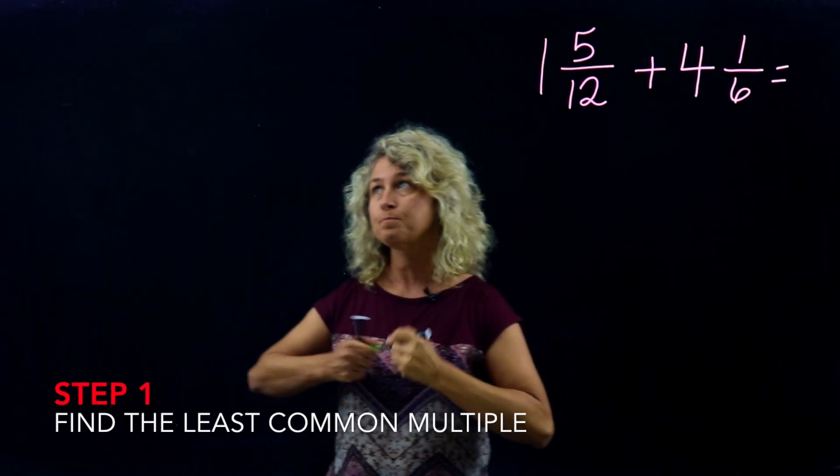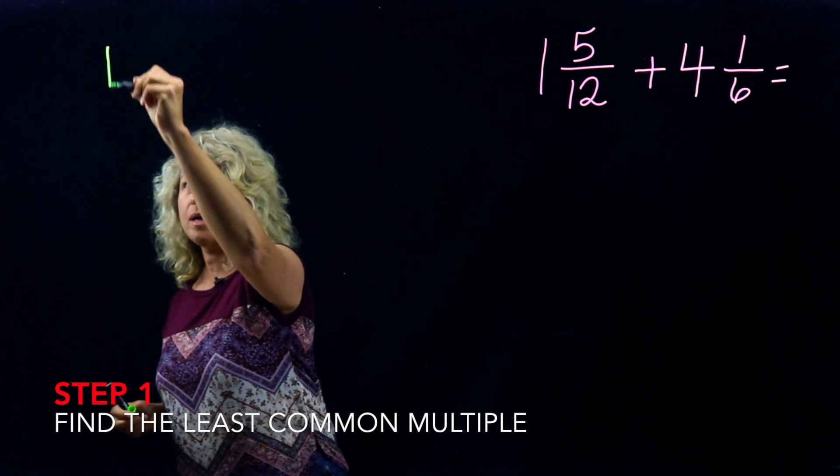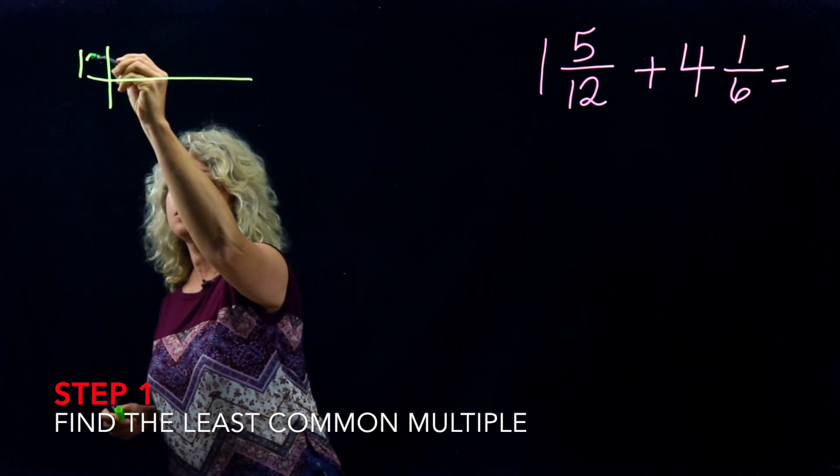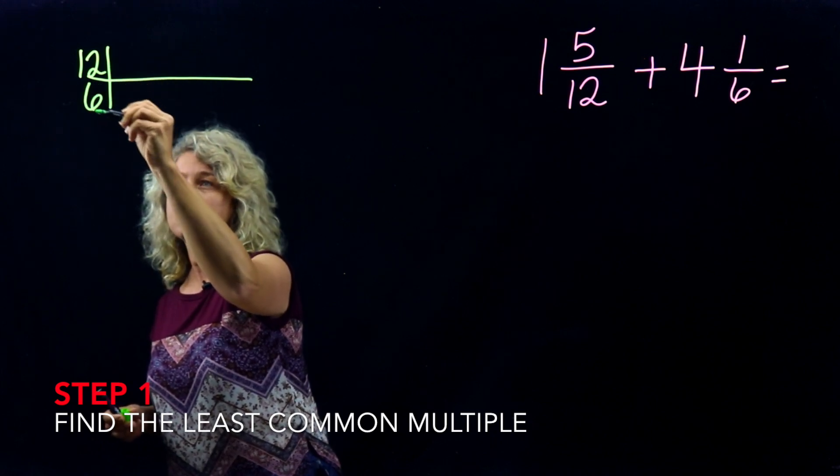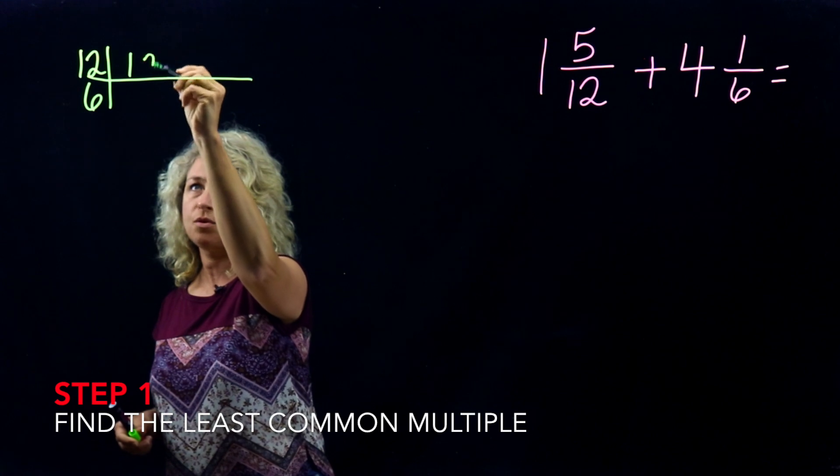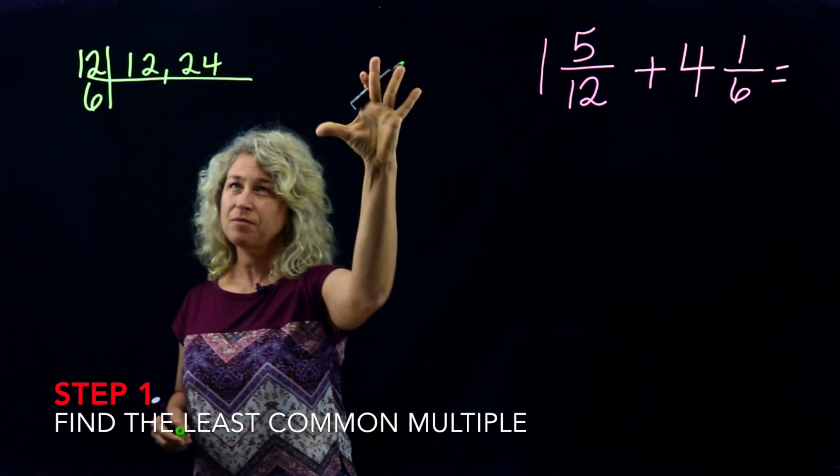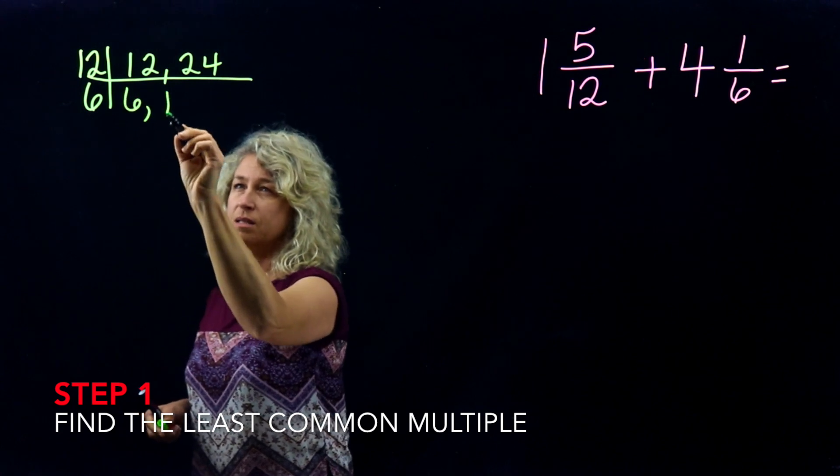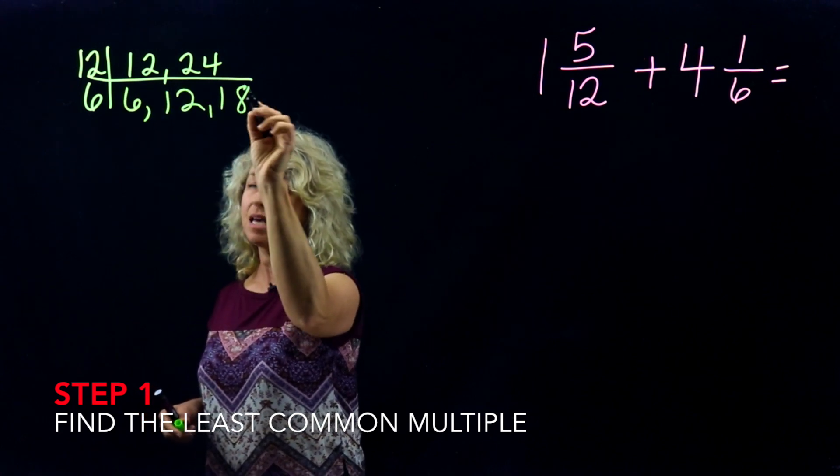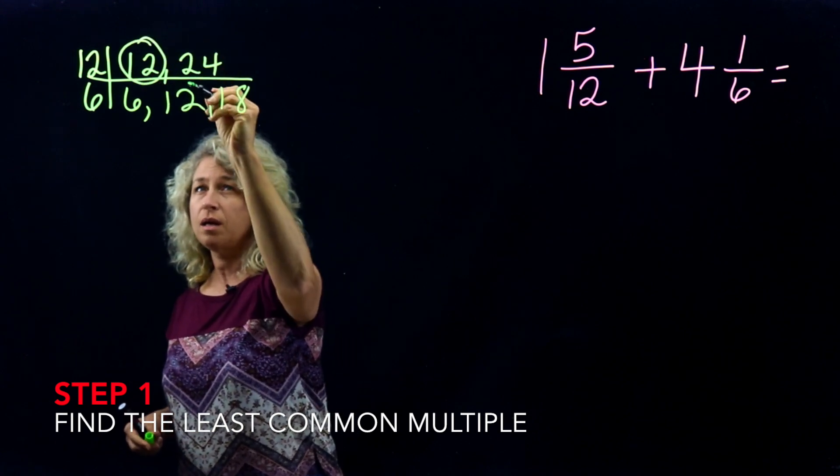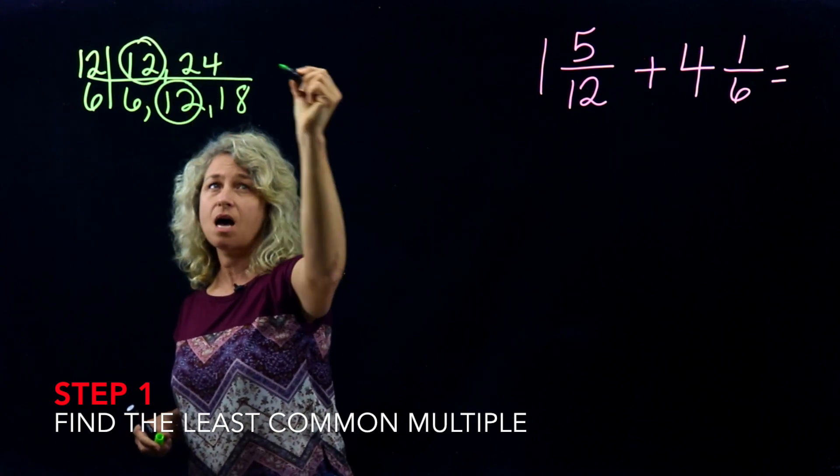So the first step is to find the LCM. A quick way to find the LCM is to list out your denominators, 12 and 6, and then skip count just a few. 12, 24, and I know I don't have to go very far with this one.